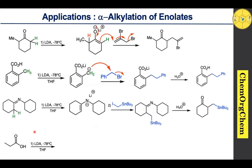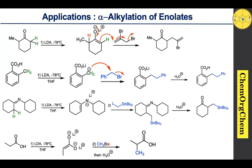Not only ketones, but alpha-methyl-substituted carboxylic acids can also be alkylated using LDA. LDA initially takes the proton from the carboxylic acid and then takes the proton from the alpha carbon, generating the corresponding enolate dianion. This dianion quickly reacts with methyl bromide, followed by workup with acid, to yield the corresponding alkylated carboxylic acid as the product.